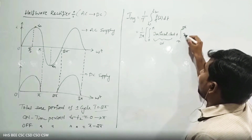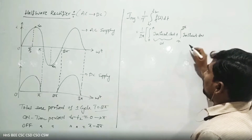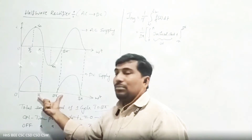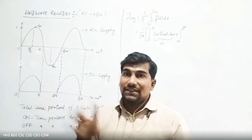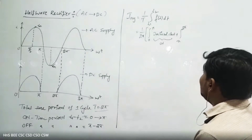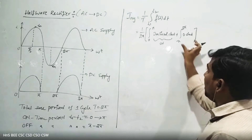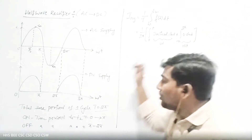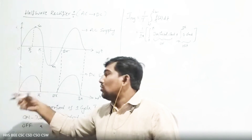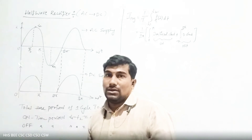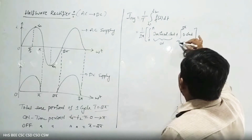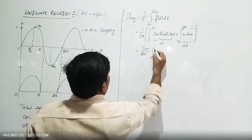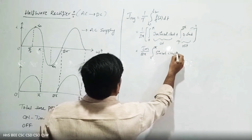This is the on condition. Now for the off condition, π to 2π — we write Im sin(ωt) — but wait, we don't have any waveform across π to 2π. Between π to 2π, we don't have any waveform, so simply write 0 · d(ωt). In the off condition, f(t) equals 0. In the on condition, we have a sinusoidal waveform, so we write the standard equation for that period, zero to π.